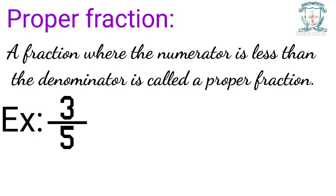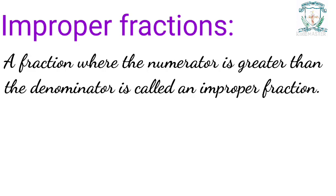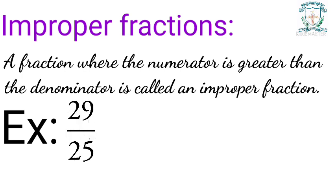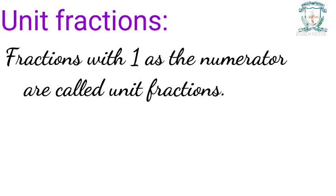For example, three by five — here three is less than five. Improper fraction: a fraction where the numerator is greater than the denominator is called an improper fraction. For example, 29 by 25 — here 29 is greater than 25.